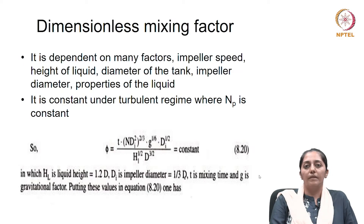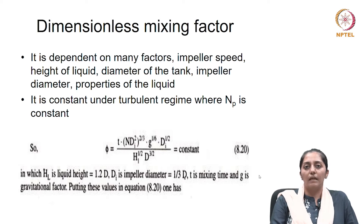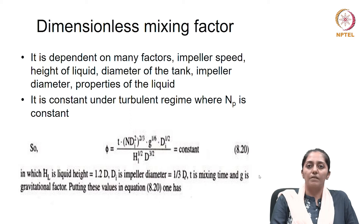Welcome back students. Yesterday we were discussing the scale-up criteria used to keep dynamic similarity at two scales during scale-up, in order to reproduce results obtained at lab scale at the large scale level. We discussed in detail the power per unit volume scale-up criteria, which is equivalent to considering equivalent mass transfer characteristics at both scales, and then the volumetric mass transfer coefficient demonstrating equivalent oxygen mass transfer characteristics at both scales.